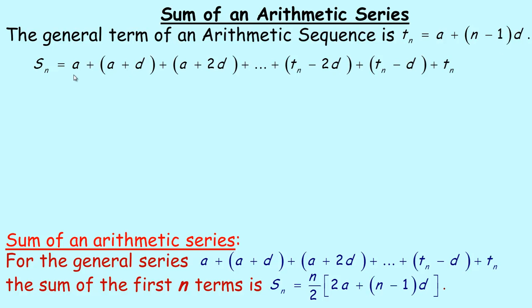A series is the sum of a sequence. So we could think of the sequence as: a, then a plus d is the second term, a plus 2d is the third term, et cetera. The sum of the first n terms would be a (the first term), plus the second term, plus the third term, up to t_n, the nth term. We could write the one preceding it as the nth term minus d, and then minus d for the one before it — that's because we're going in reverse order.